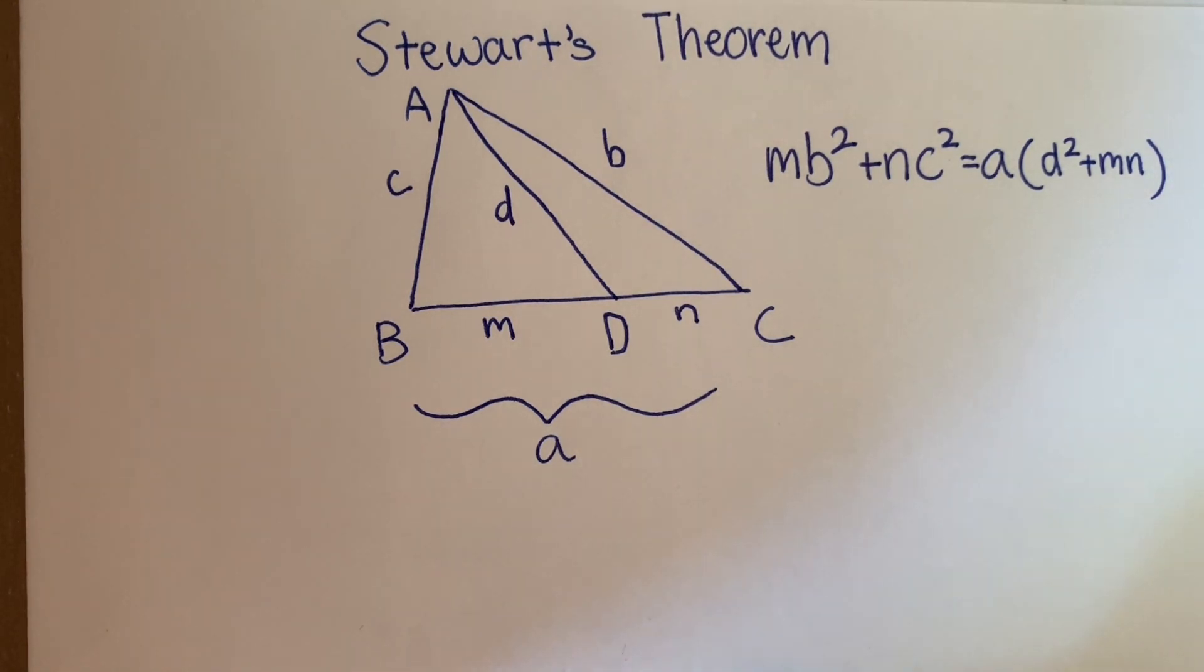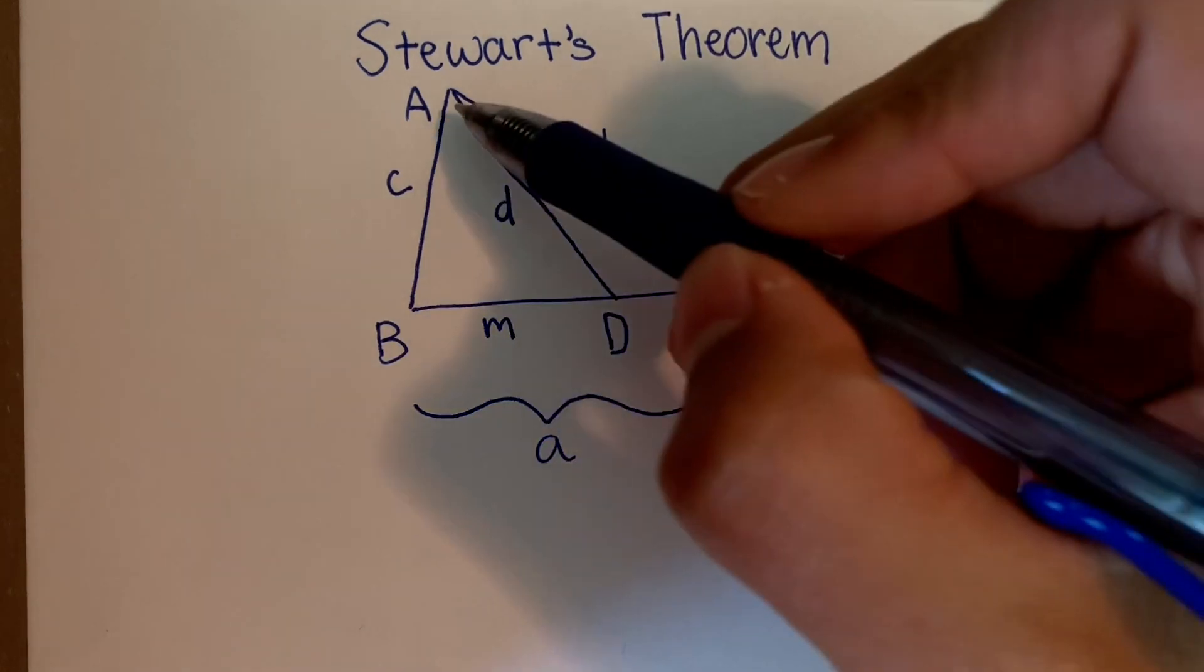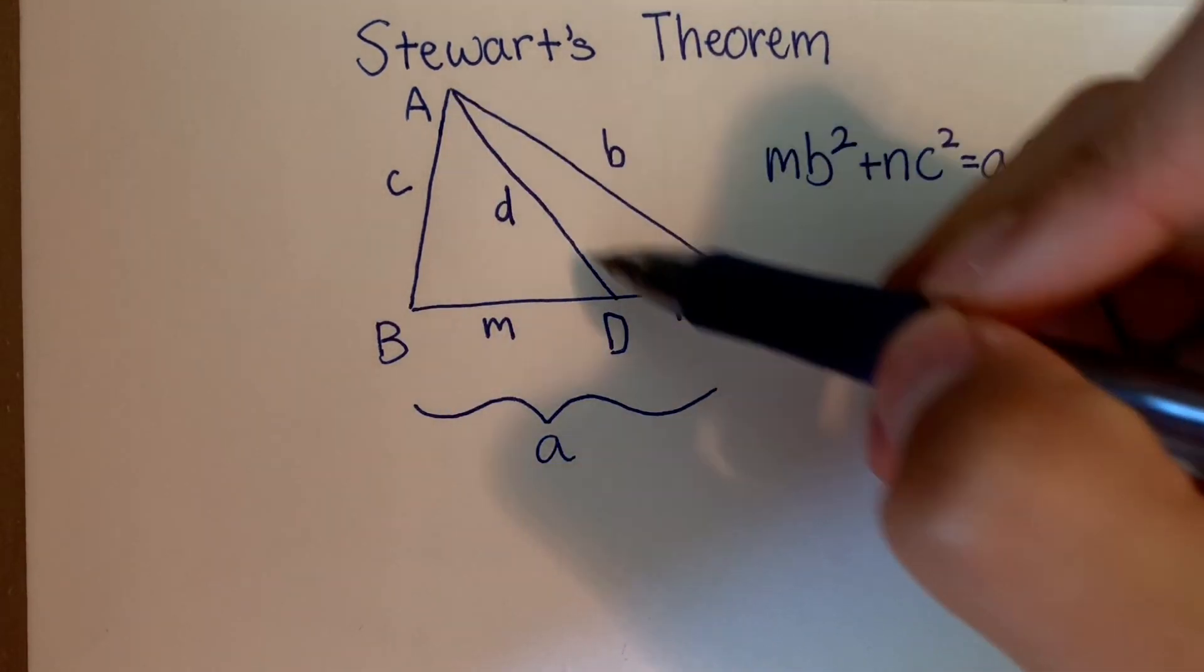To prove Stewart's Theorem, we'll be using the law of cosines in triangle ABD and triangle ADC.